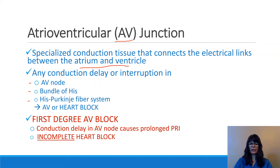Today we'll be looking at first-degree AV block, which means there's a conduction delay in the AV node that causes a prolongation in the PR interval. Remember, the PR interval represents the time it takes the impulse to travel through the atrium all the way to the top part of the ventricles. So if we have a delay in the AV junction, it will be represented by a prolonged PRI.